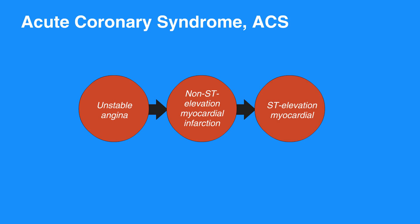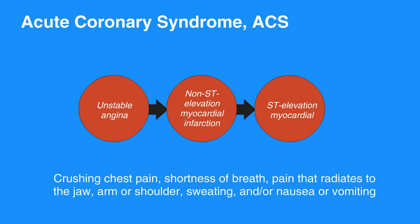ACS is classically recognized by one or more of these symptoms: crushing chest pain, shortness of breath, pain that radiates to the jaw, arm, or shoulder, sweating, and/or nausea or vomiting.